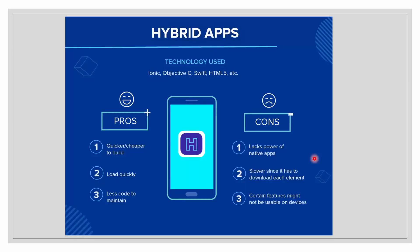Hybrid apps use a mixture of web technology and native APIs. They are developed using technologies like Ionic, Objective-C, Swift, and HTML5. Building a hybrid app is much quicker and more economical than a native app. A hybrid app can serve as a minimum viable product — a way to prove the viability before building a native app. They load quickly and have less code to maintain.